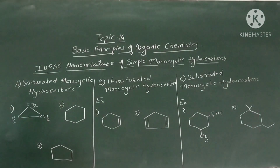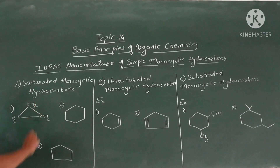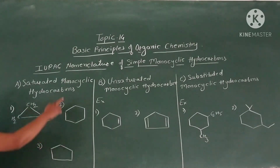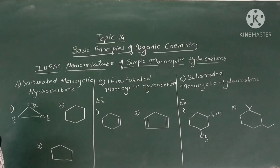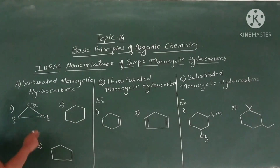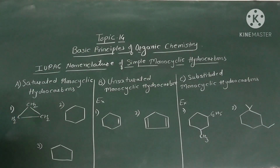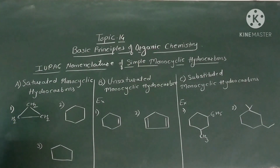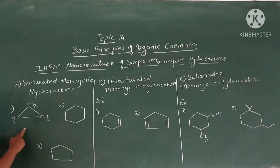First we are going to see nomenclature of saturated monocyclic hydrocarbons. Saturated means having carbon-carbon single bond, monocyclic means having a single ring, and hydrocarbons means having carbon and hydrogen atoms. Now here is the first example. In this example there are three carbon atoms — the parent alkane is propane — but all three carbon atoms are in a ring structure. Therefore the name of this compound is cyclopropane.